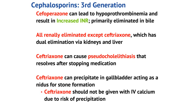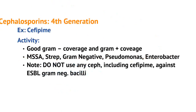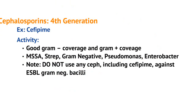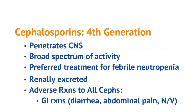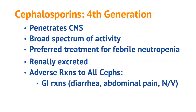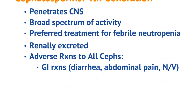Fourth gen cephalosporins — specifically cefepime — have good gram-negative and gram-positive coverage. Cefepime covers methicillin-sensitive Staph aureus, Strep, gram-negatives, Pseudomonas, and Enterobacter. However, you should not use any cephalosporin, including cefepime, against ESBL gram-negative bacilli — meaning extended-spectrum beta-lactamase producers. Fourth gen cephalosporins penetrate the CNS, have a broad spectrum of activity, and are commonly used for the treatment of febrile neutropenia. They are renally excreted and have generally the same side effects as other cephalosporins, including diarrhea, abdominal pain, nausea, and vomiting.